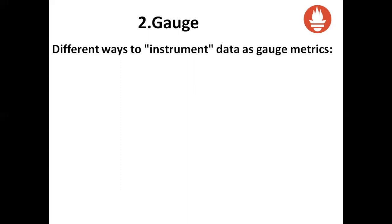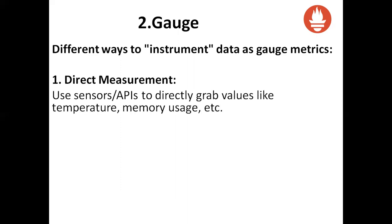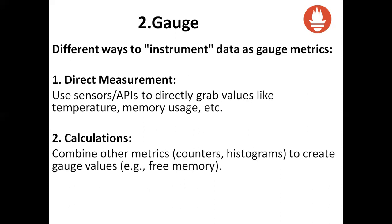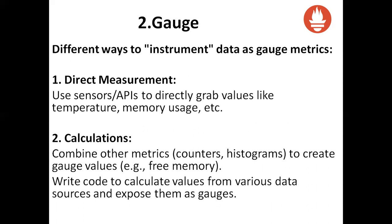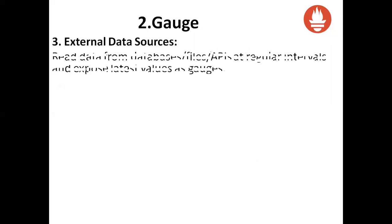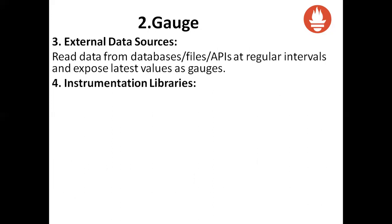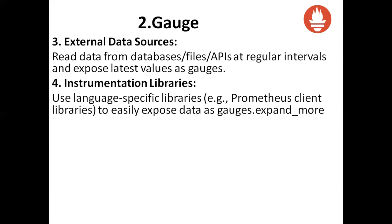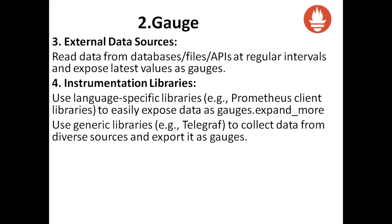Different ways to instrument data as gauge metrics: Direct measurement — use sensors or APIs to directly grab values like temperature, memory usage, etc. For calculations, we combine counters and histograms to create gauge values, like calculating free memory. For that, we write code to calculate values from various data sources and expose them as gauges. External data sources read data from databases, files, or APIs at regular intervals and expose the latest values as gauges. Instrumentation libraries, provided by Prometheus client libraries, easily expose data as gauges. Generic tools like Telegraf can collect data from diverse sources and export it as gauges.